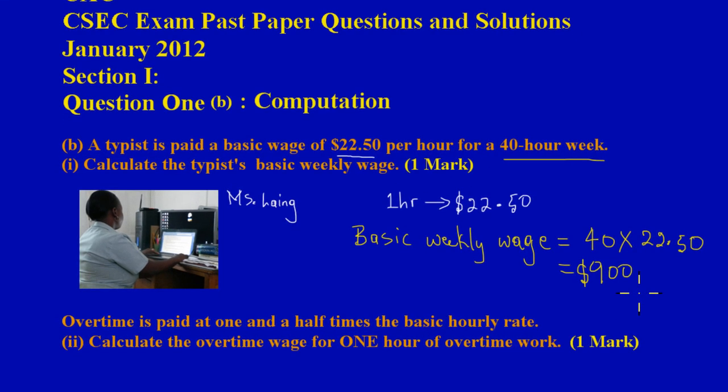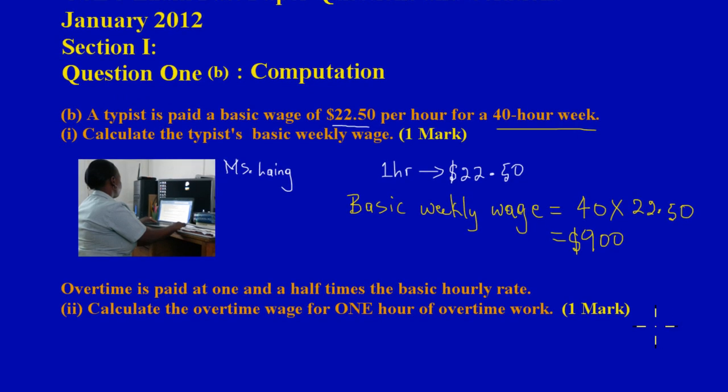Now let's get into part two. Overtime is paid at one and a half times the basic hourly rate. Part two asks: calculate the overtime wage for one hour of overtime worked, and that's one mark. Let's just look at that.